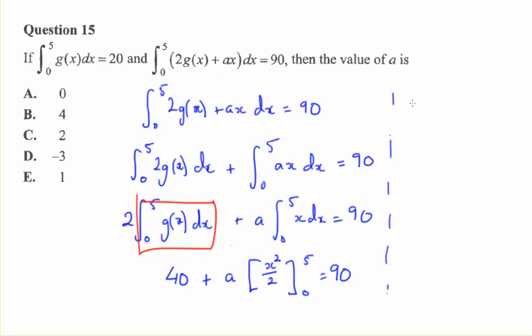So let's put the 40 on the other side. So we get a times x squared on 2 from 5 to 0 equals 50.